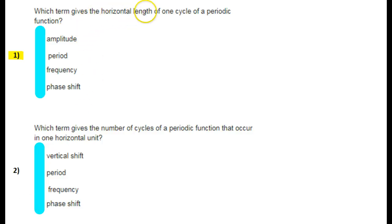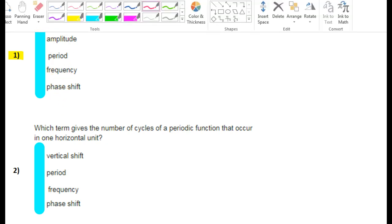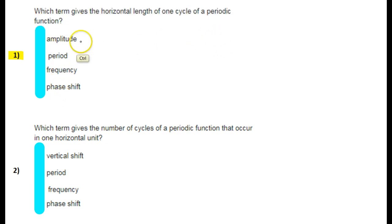Which term gives the horizontal length of one cycle of a periodic function? Well, let's go through these one by one and talk about what they mean. Let's start with amplitude. Alright, so a periodic function is a function that repeats itself over and over again.